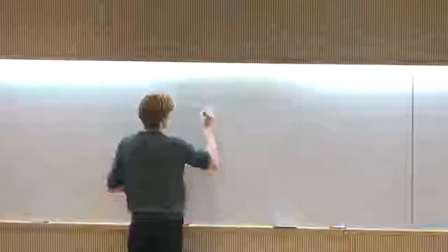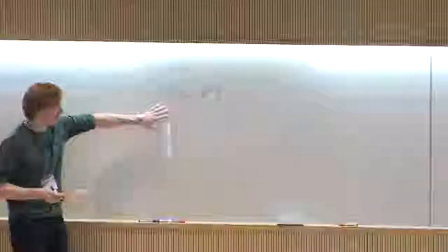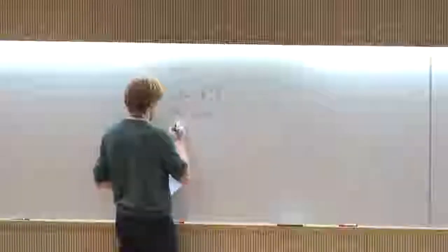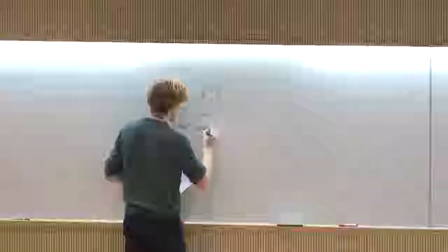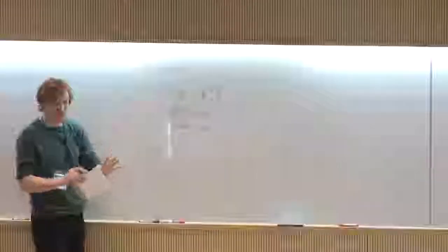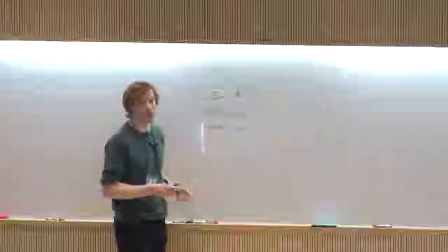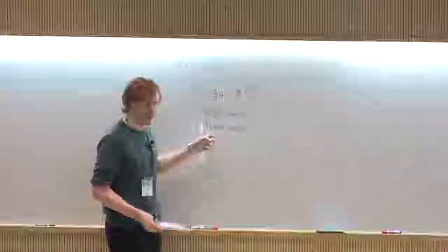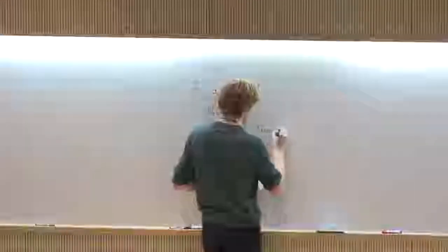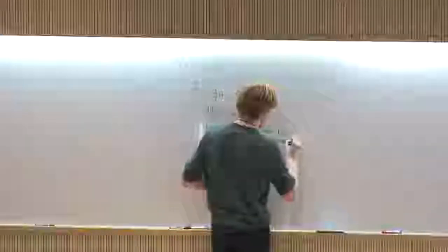I wrote down the partition function as a function of some metric and some sources, viewed as a path integral very abstractly. I said this had better be diffeomorphism invariant, which is generally the case, and Weyl invariant — invariant under Weyl rescalings. I argued that we're looking at scale invariant theories, and often, for various reasons that Thomas also referred to, you get a Weyl invariant theory, at least up to anomalies that I have ignored so far and will continue to ignore in these lectures.